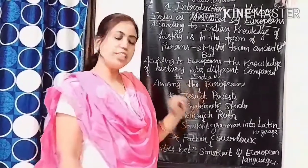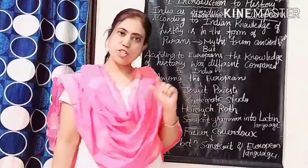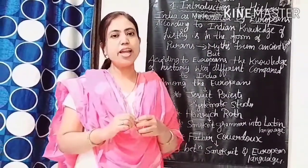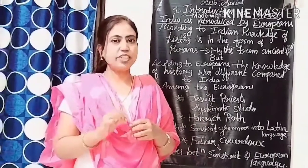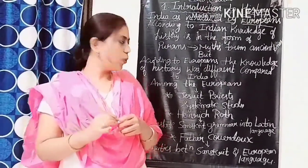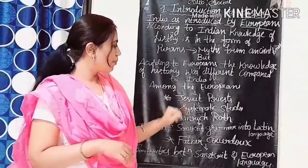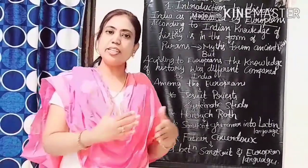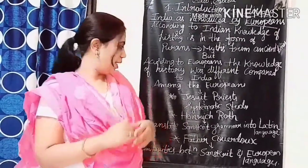Among the Europeans who arrived in India were Jesuit priests. In 1534, Ignatius Loyola established the Society of Jesus in Paris. This is a male religious congregation of the Catholic Church. The members of the Society of Jesus were known as Jesuits. They arrived in India in the 16th century and made a systematic study of Indians' lifestyles and day-to-day activities, and in this way they tried to construct the history of India.